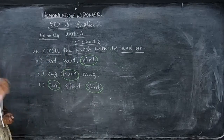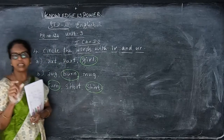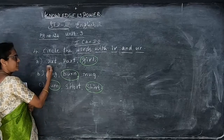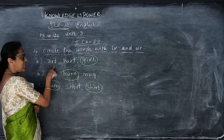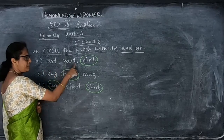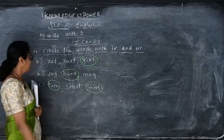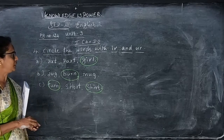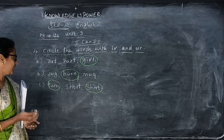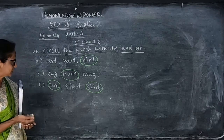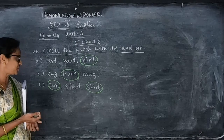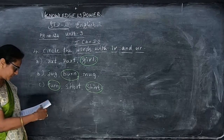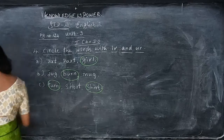See whichever letters have I-R and U-R — circle those words. To summarize: A-R-T, no; P-A-R-T, no; G-I-R-L, circle. J-U-G, no; B-U-R-N, circle; M-U-G, no. T-U-R-N, circle; S-H-O-R-T, no; S-H-I-R-T, circle. These are the words that should be circled.